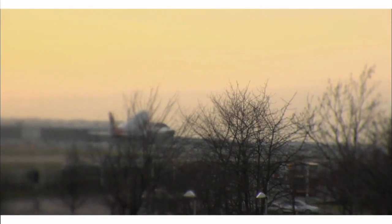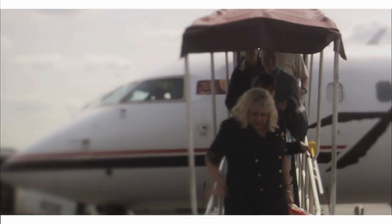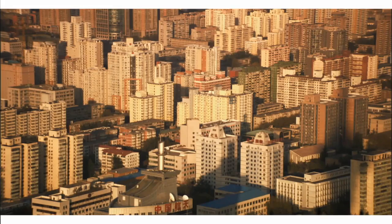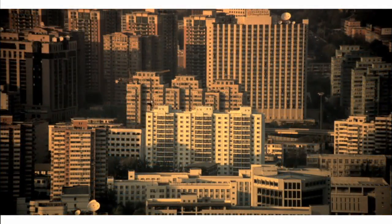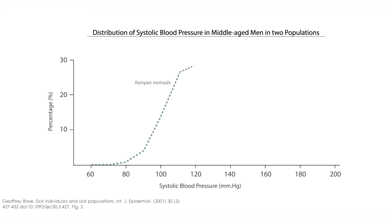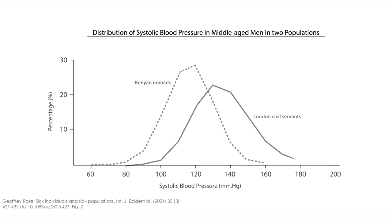Migration into urban environments also accounts for a great deal of this change. When you look at Kenyan nomads who live in very rural conditions and London civil servants — this is one of the earlier studies of Jeffrey Rose — you find a marked change in the distribution of systolic blood pressure across these two populations. In London, the entire distribution is far to the right, meaning the average blood pressure as well as the proportion of those with hypertension is far higher than in the Kenyan nomads.